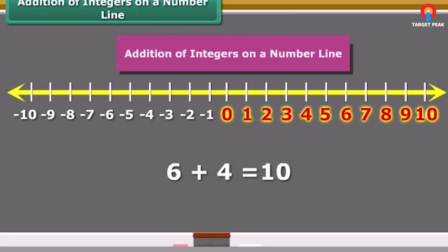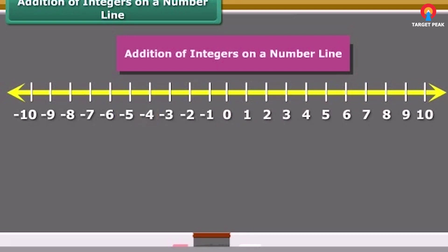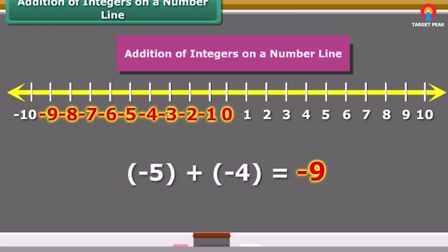Let us add two negative numbers, minus five and minus four, on the number line. In this case, first we move five steps to the left of zero reaching minus five, and then we move four steps to the left of minus five and reach minus nine.